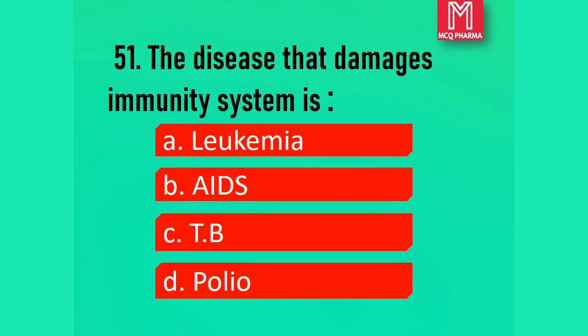Question number 51. The disease that damages the immunity system is: Option A, Leukemia. Option B, AIDS. Option C, T. Option D, Polio. Correct answer: Option B, AIDS.